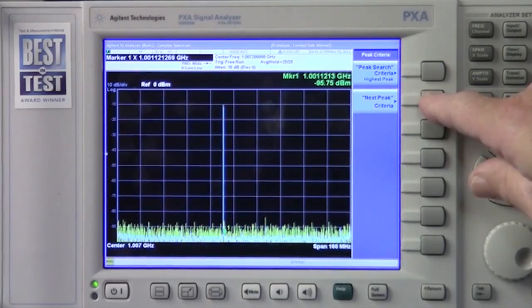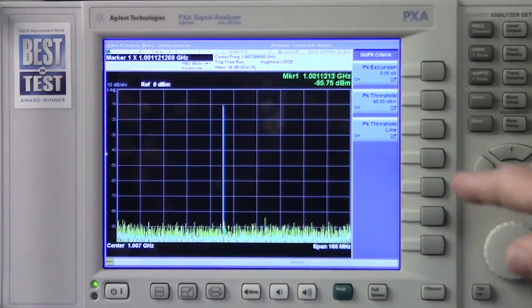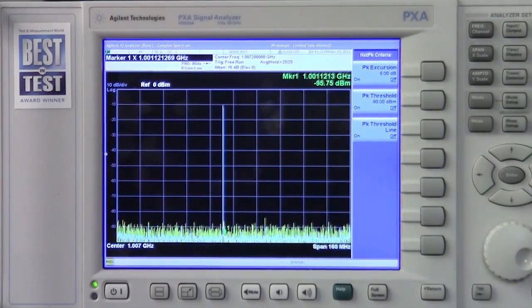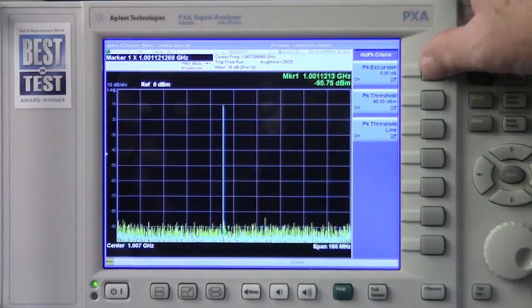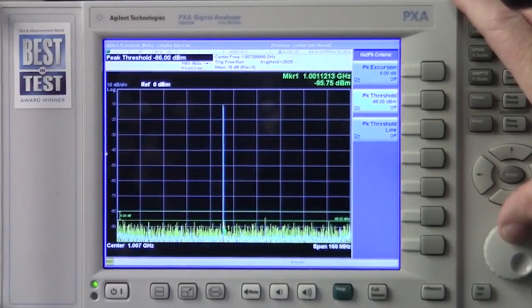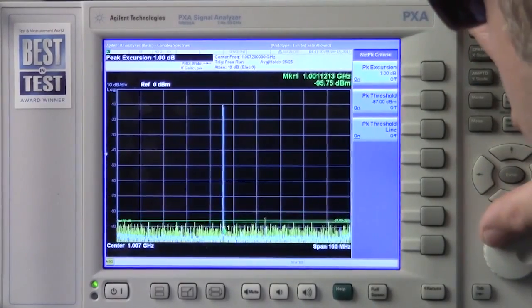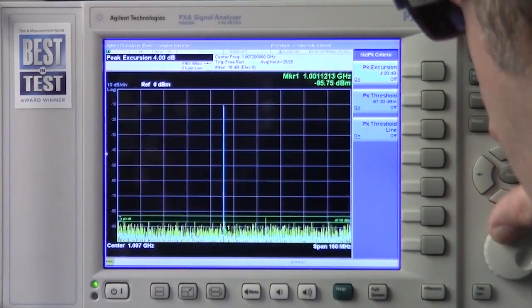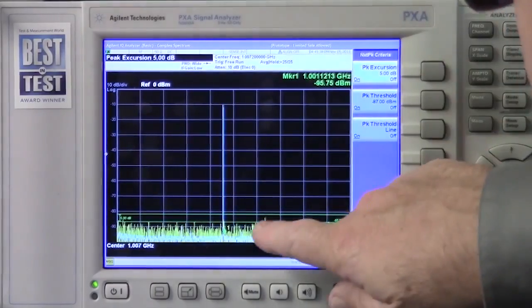And in the peak criteria menu under next peak criteria, you now have the ability to set the excursion and threshold that you want. So let's set the threshold and the excursion to exclude peaks below this big one that we want to see right here.